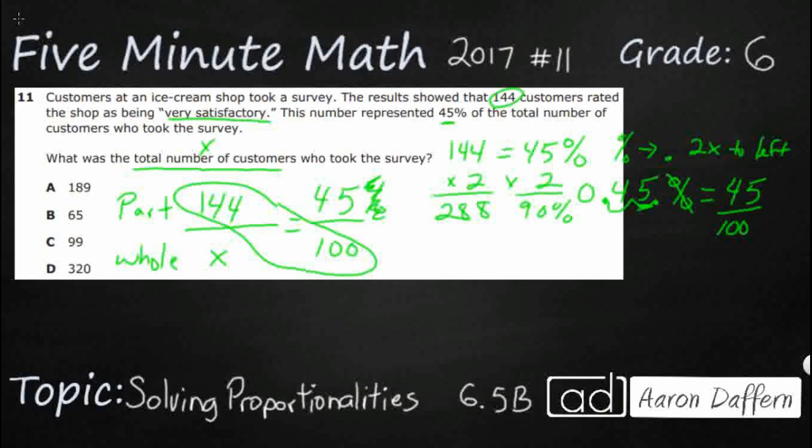And so now we have an equivalent fraction and we can use cross multiplication. So this 144 times 100, which is going to make 144 with two extra zeros. That's what we know when we multiply by 10, 100 or 1,000. We just add the zeros at the end equals this 45x. So we've got 45x equals 14,400.